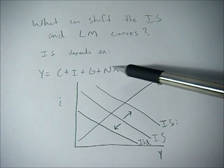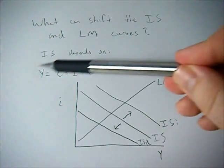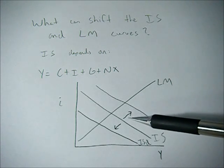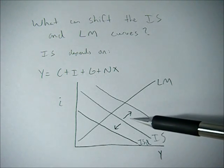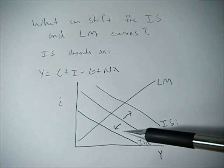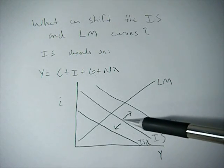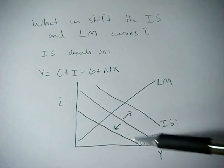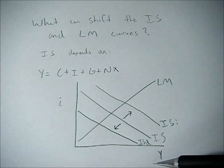Because exports are going up makes this more positive, makes Y more positive. If exports go down because the currency is getting stronger or the rest of the world is getting poorer, then we see this leftward shift or decrease in the IS curve.